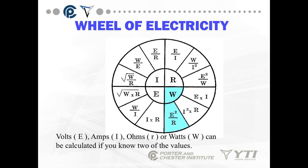Voltage, amperage, ohms, and watts can all be calculated if you know any two of the values. By knowing any two values, you can calculate I, R, E, and W. That's the wheel of electricity.